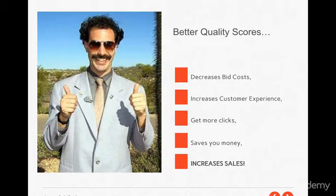Better quality scores decrease your bid costs and increase your customer experience because they're getting what they thought they would get — they're clicking on an ad because it's what they wanted and going to a page that is what they wanted as well. You get more clicks for less money, and ultimately you'll increase sales if you stay along that same line of relevance. Quality score is extremely important — it keeps your costs down, you get more clicks for the same amount of money, and this is something to definitely focus on when getting into your ads throughout this course.